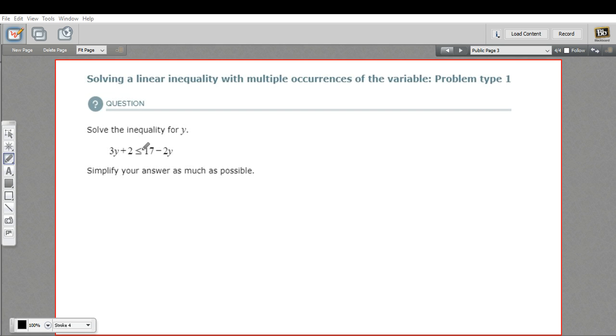In this case, I don't think we have to. I've got 3y over here, and I've got negative 2y over here. So I think I'm just going to add 2y to both sides. When I do that, 3y plus 2y is 5y. And then I've got my plus 2. I've got my less than or equal to, and 17. And of course, negative 2y plus 2y is 0, so that goes away.